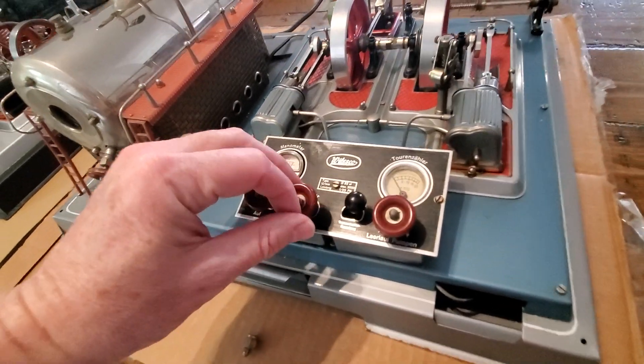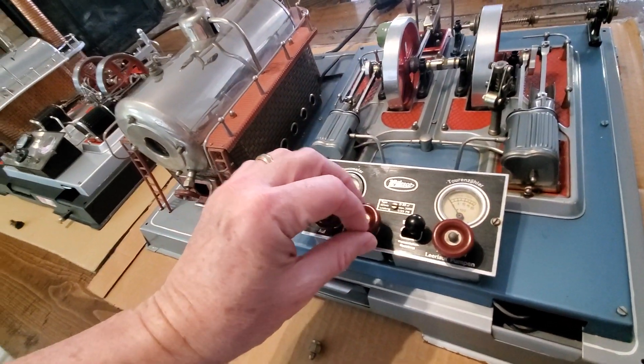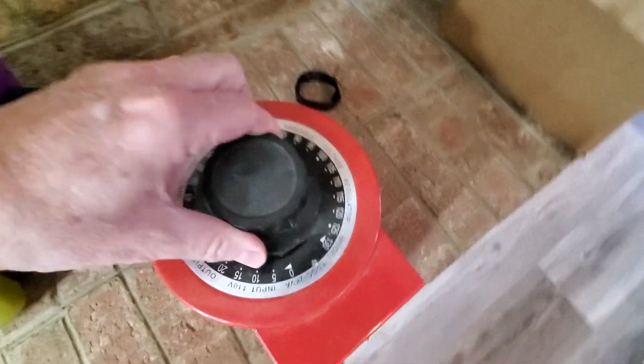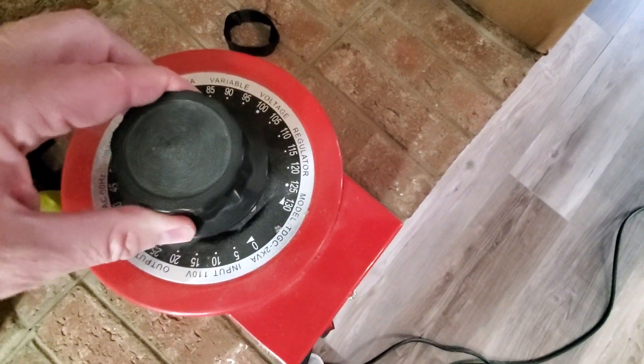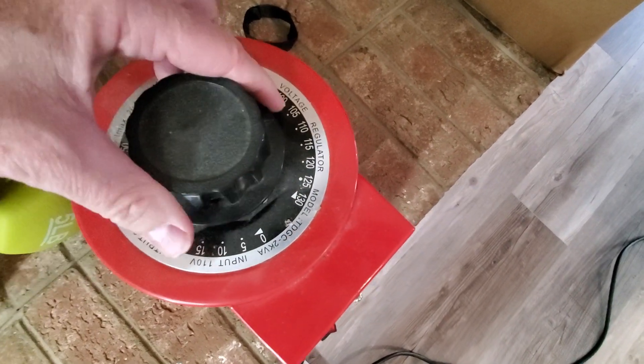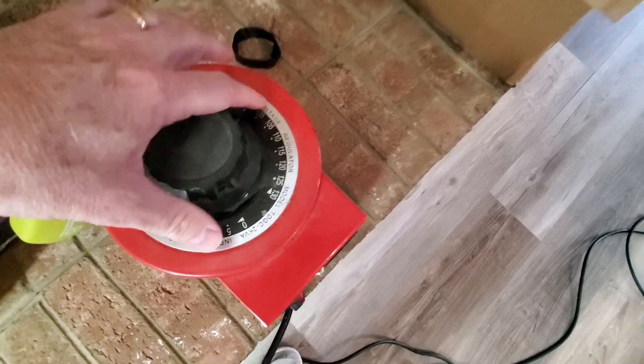So what we will do now is I have these plugged into a variac generator, I mean a voltage regulator over here. So we're going to spin this over, it's basically on 110. You got 115, 120. I'm going to pull it back to about 100 as we start.